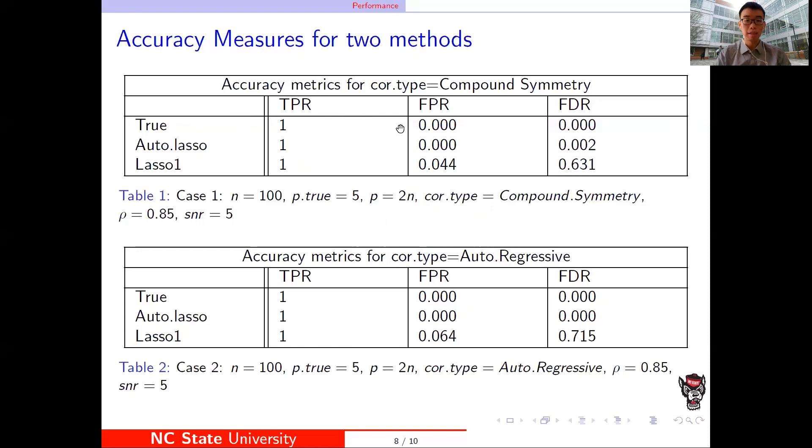You can see the table of correlation type compound symmetry: the AutoLasso method's TPR is one, FPR and FDR is close to zero. But the classical Lasso method with the large FPR and FDR, this is the same as the correlation type equal to autoregressive.